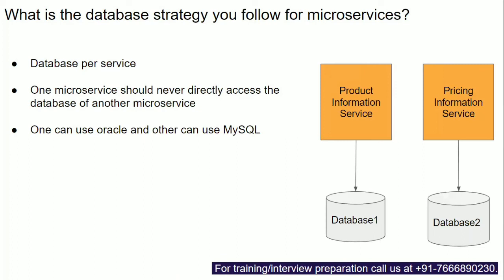The next question is: what is the database strategy you follow for microservices? There are many strategies, but personally I use database per service — one database per service. The product information service has database one, and the pricing information service has database two. Every microservice has its own database, and product information service is not allowed to access database two, which belongs to pricing information service, and vice versa.